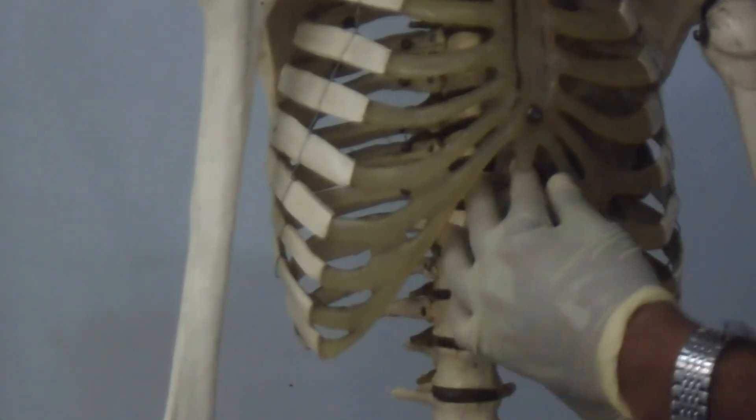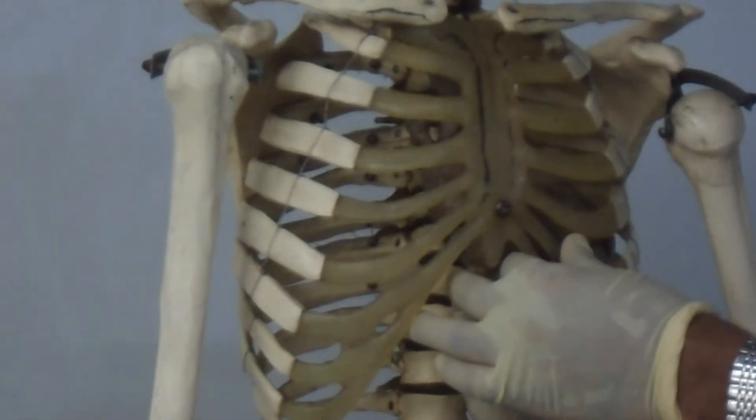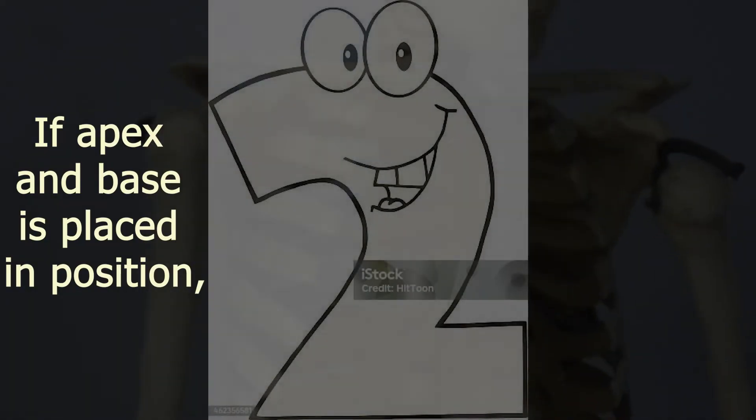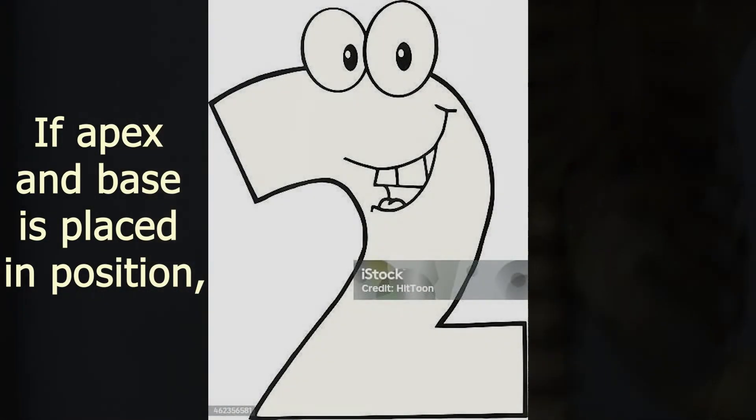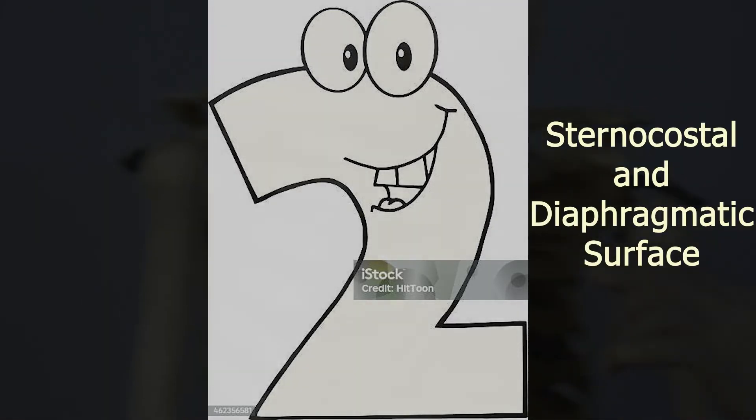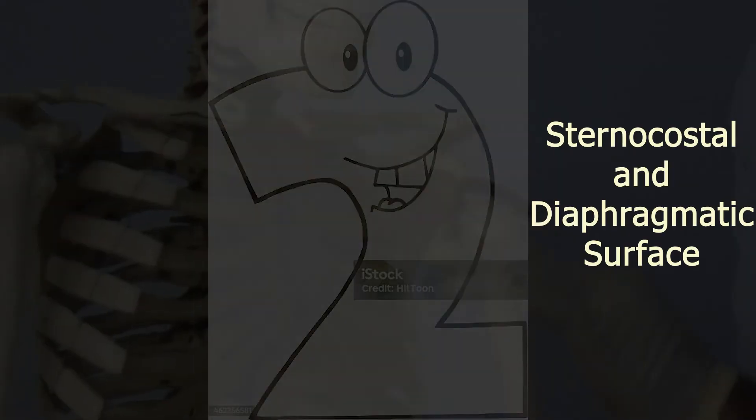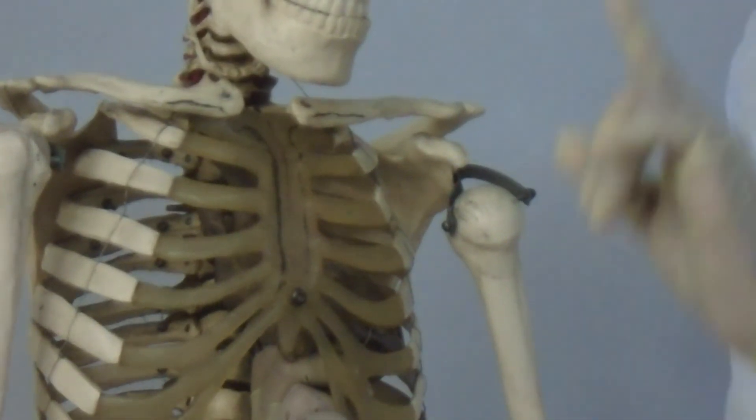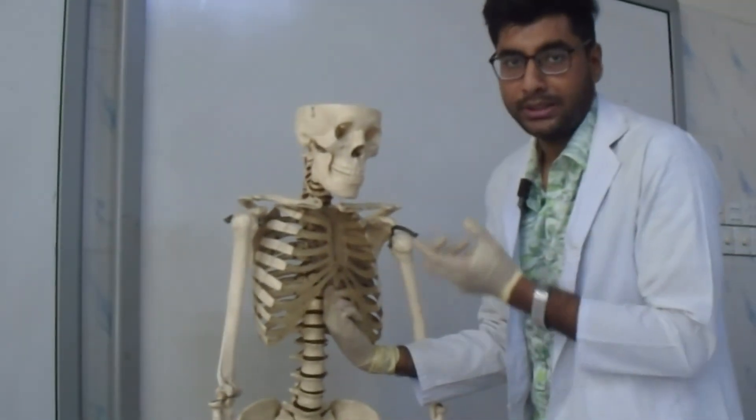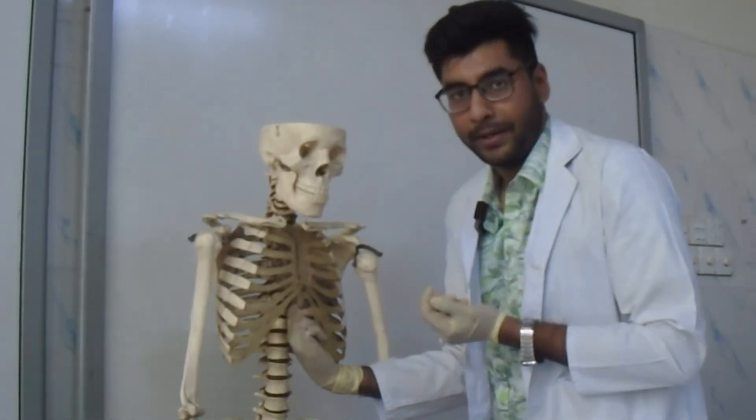Now we have the base established. The sternocostal surface is convex and is directed forward and upward, and the diaphragmatic surface is nearly horizontal and gradually slopes downwards and forwards towards the apex.